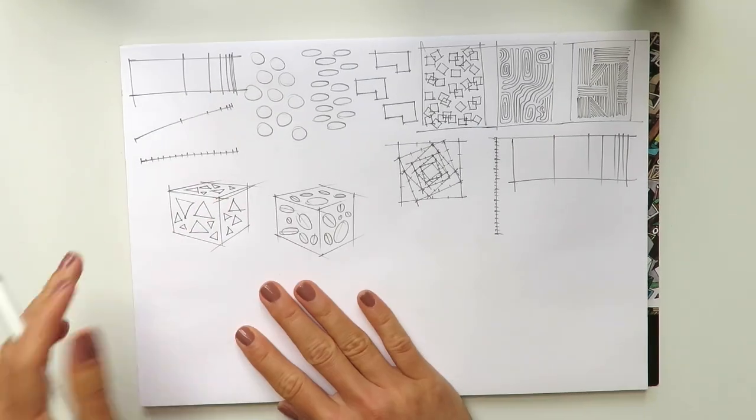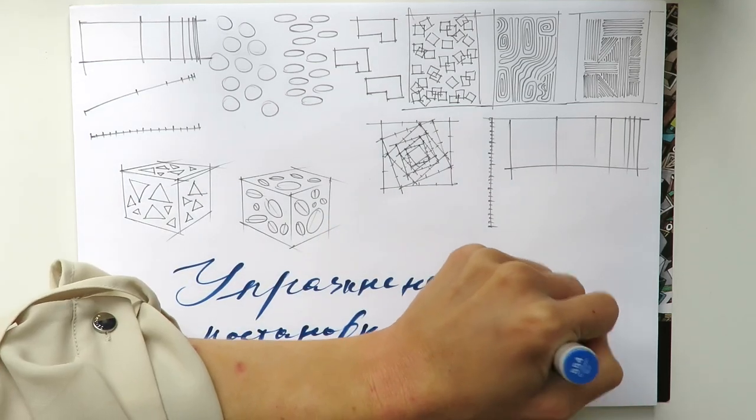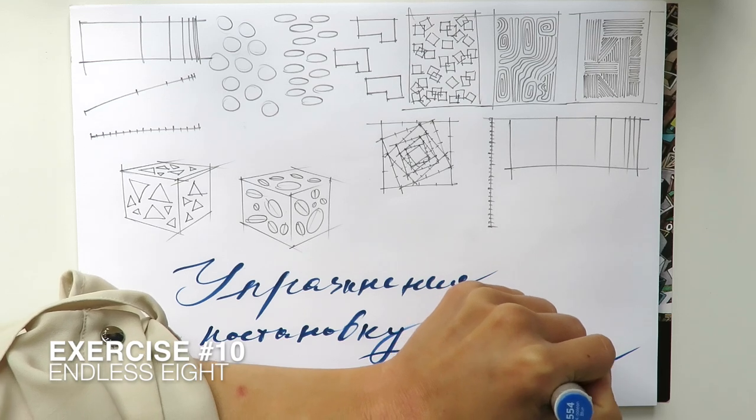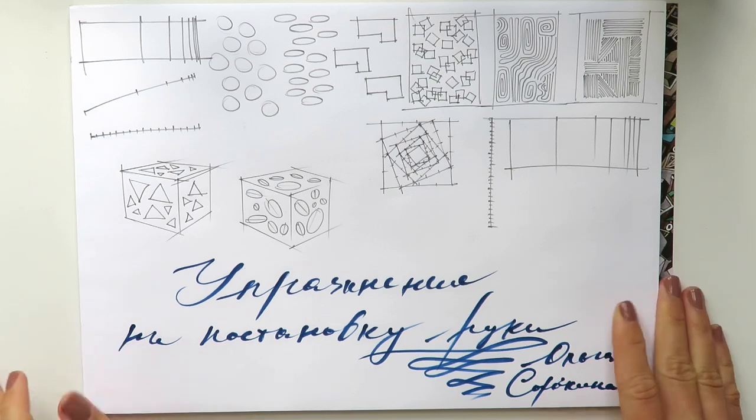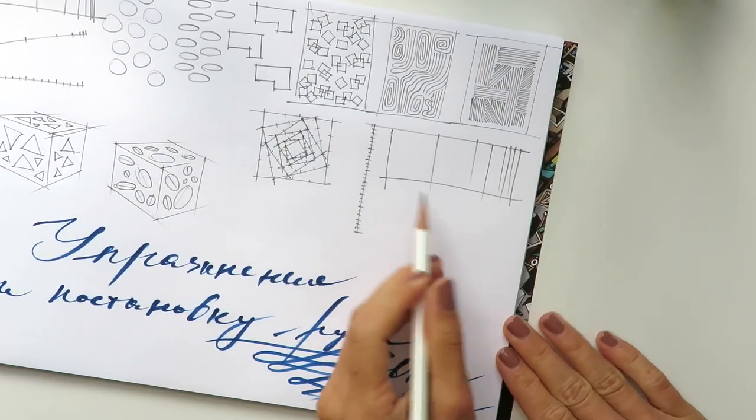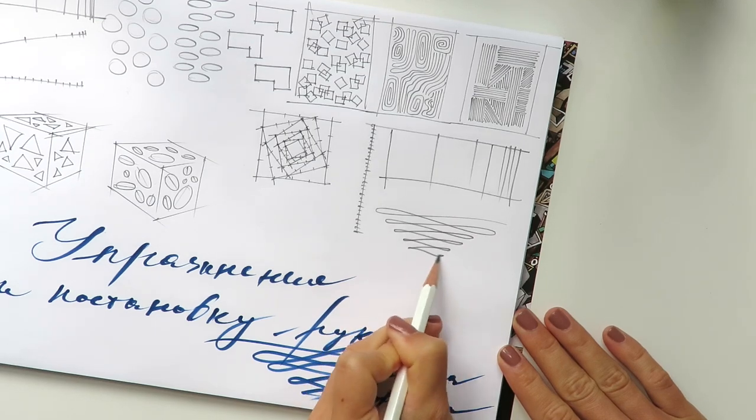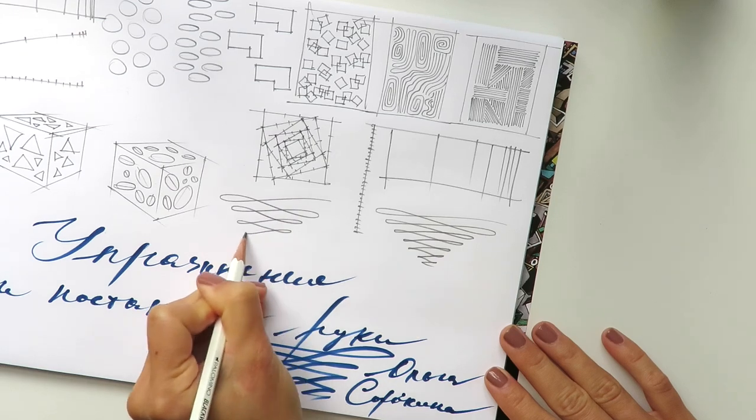All right, and it's time for our last exercise, and I call it endless eight. As you can see now, I'm writing and writing this in Russian that means exercises to train your hand, because as you know, I'm originally Russian.